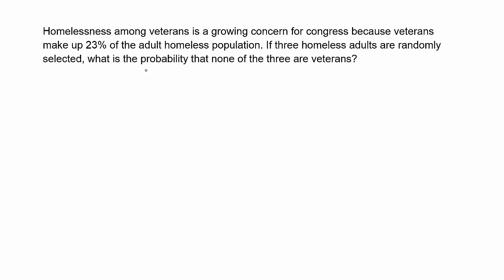When I read this problem, I can see that it's asking me to find a probability. I want to be paying attention to how many items are randomly selected — it says we're going to randomly select three homeless adults. That matters because if you're randomly selecting three things, you will generally need three probabilities multiplied together. If you're randomly selecting two things, you will generally need two probabilities multiplied together.